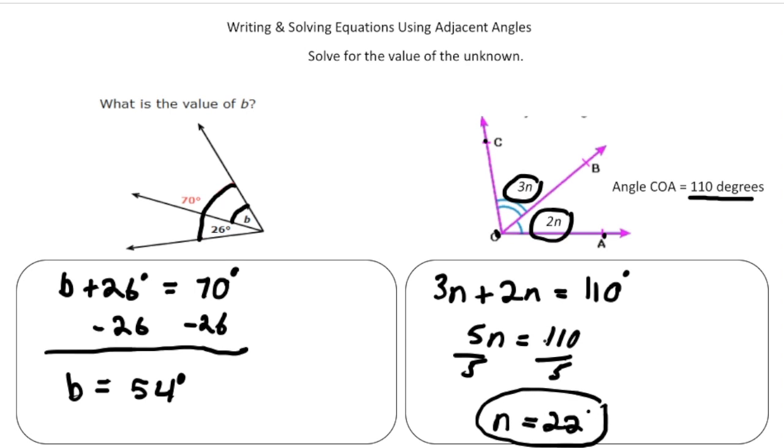So the big facts about adjacent angles. They're angles that share a side and share a common vertex. And more times than not, they add up together to equal something. So here it was B plus 26 equals 70. And here it was 3N plus 2N equals 110. So why don't you pause the video and try your turn problems now. And then when you're done, you can hit play and see how you did. Good luck.